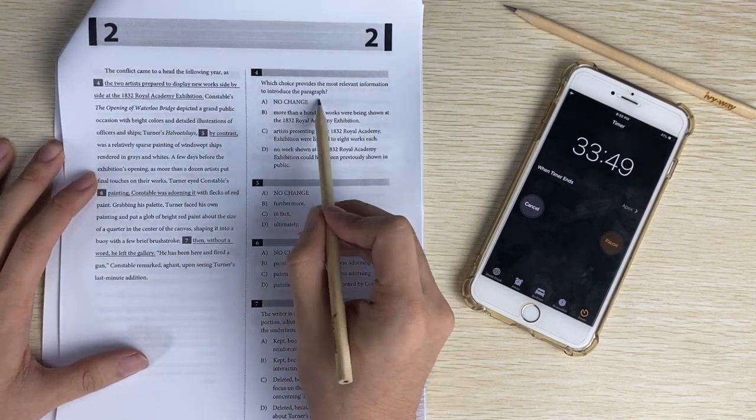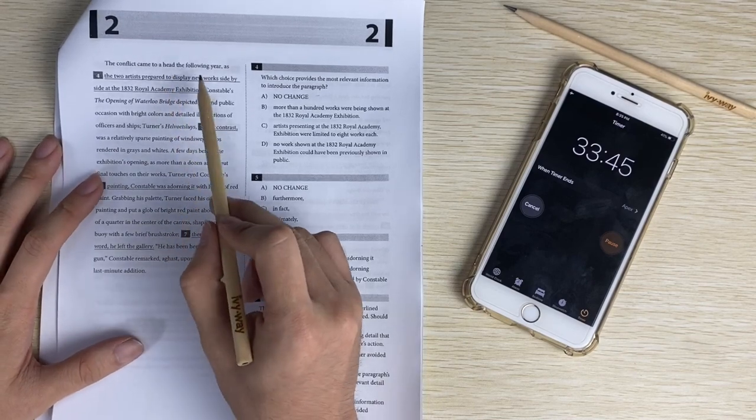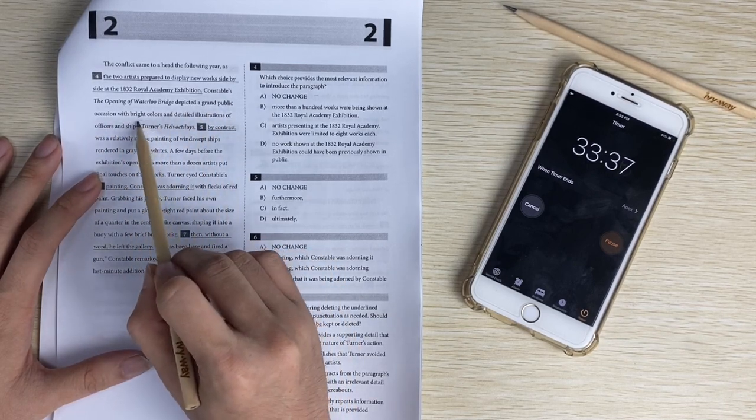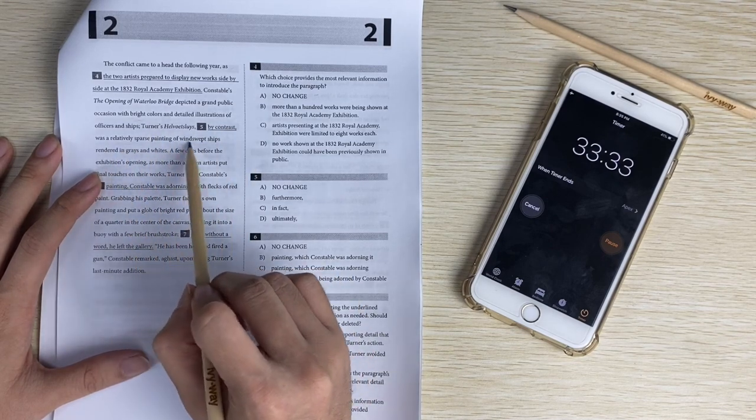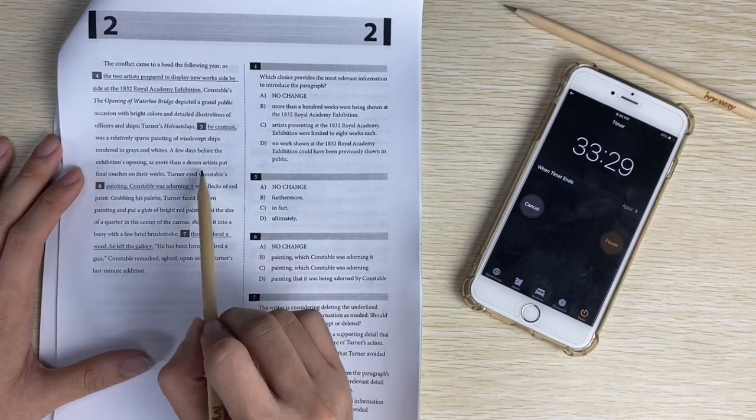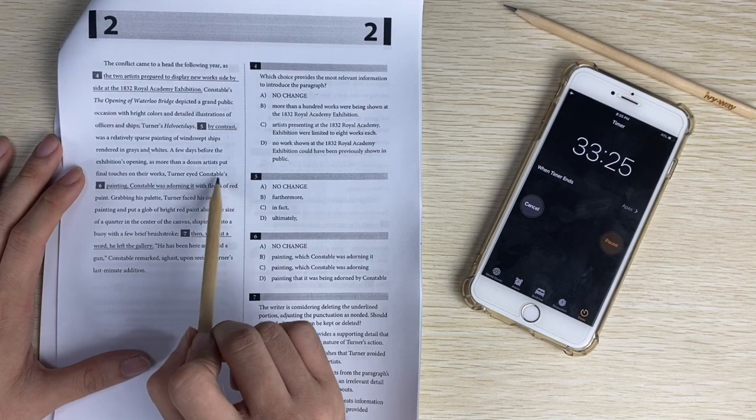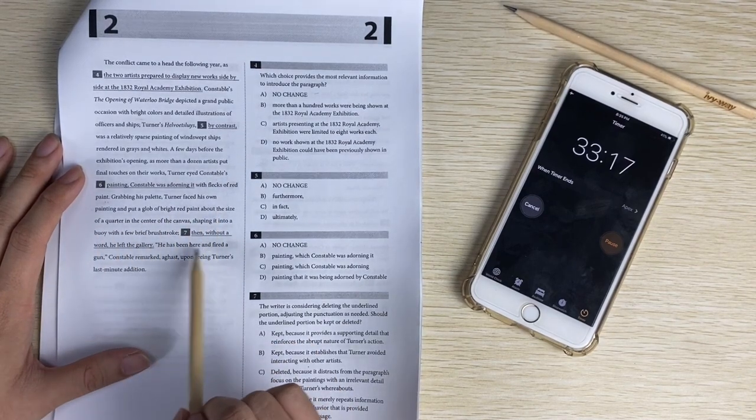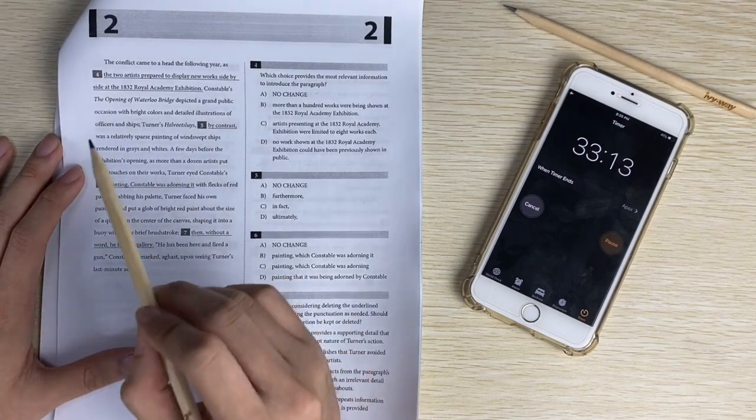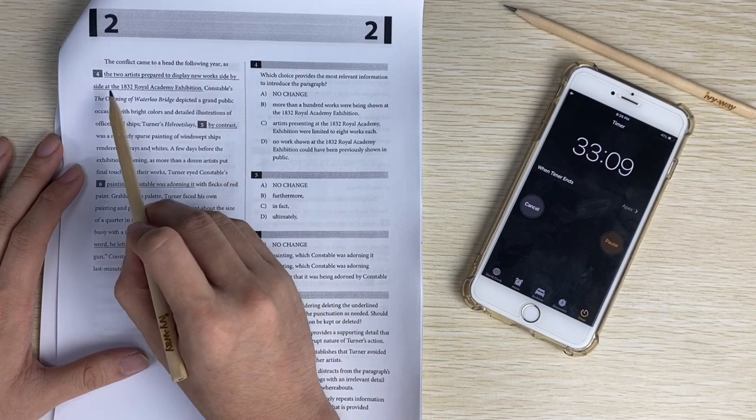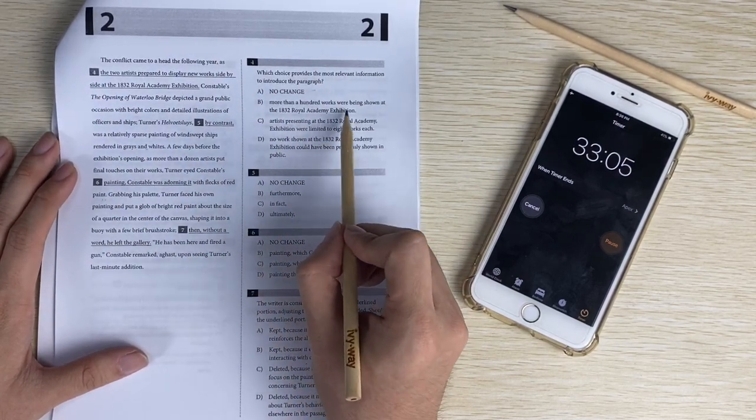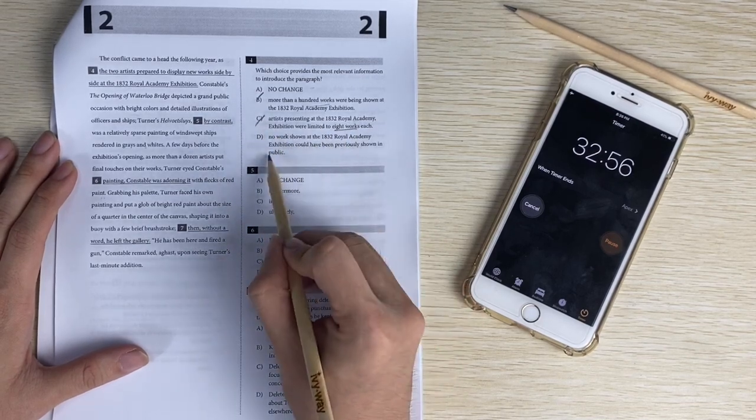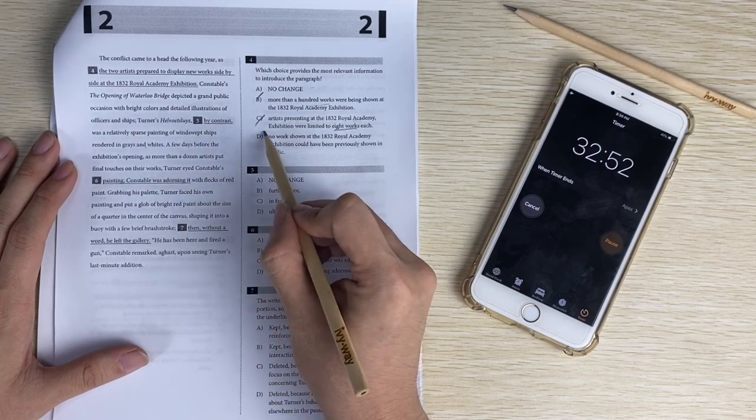Number four provides the most relevant information to introduce the paragraph. Let's read the paragraph. It's talking about conflict, and his painting depicted something with bright colors, and Turner's was a different kind of color. It's comparing the two, how they're different. So choice A, the two artists prepared to display new works side by side, that might be right. More than a hundred works were being shown - not about other works, so B is wrong. It should be about those two people comparing, so the answer is A.